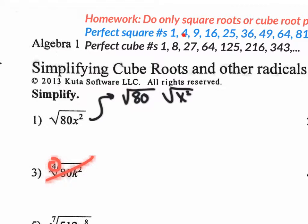Perfect square numbers: 1, 4, 9, 16, 25, 36, 49. We want to rewrite 80 — note that 81 is a perfect square (√81 = 9), but it says 80, not 81. So we rewrite it with multiplication using the highest perfect square possible. 25 times 3 is 75, that won't work. 16 times 5 gives you 80 — that's the correct combination.